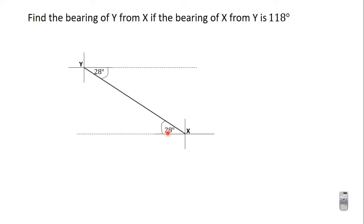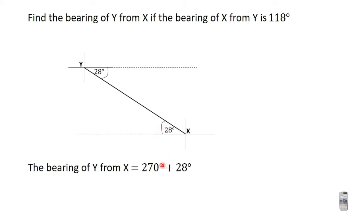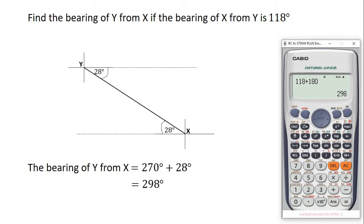In the video on angle properties of parallel lines under plane geometry, this property is explained in detail, so watching that video will help you understand why this angle is 28 degrees. The bearing of Y from X is measured clockwise from the north line. We know that from the zero point up to the west direction is 270 degrees, so to get the bearing we add 270 degrees to 28 degrees: 270 + 28 = 298 degrees. So the back bearing is 298 degrees, the same result we got using the formula.